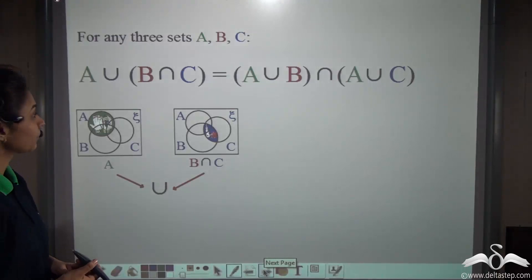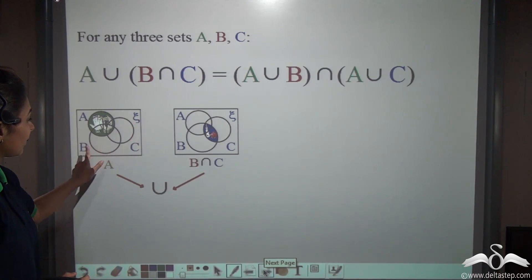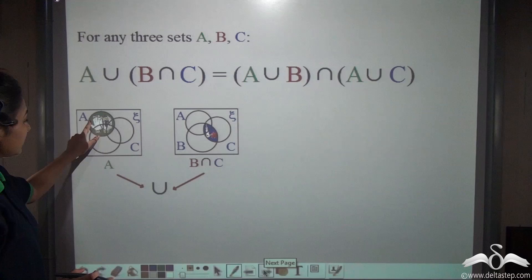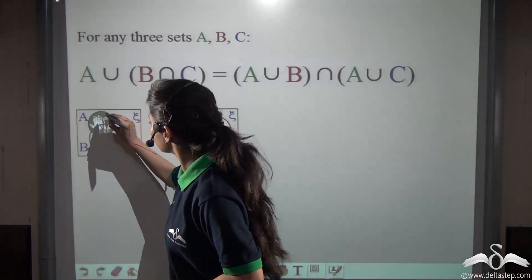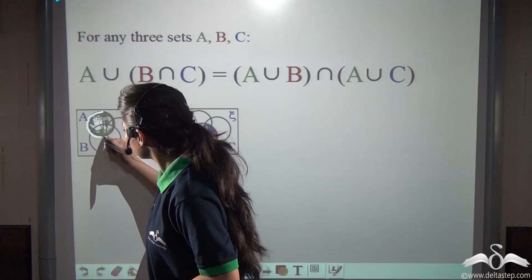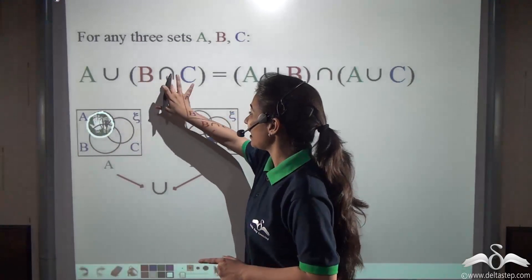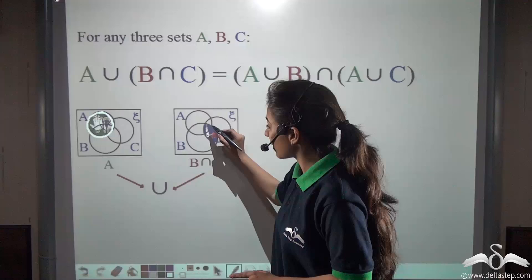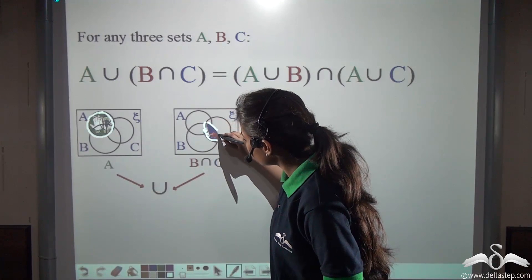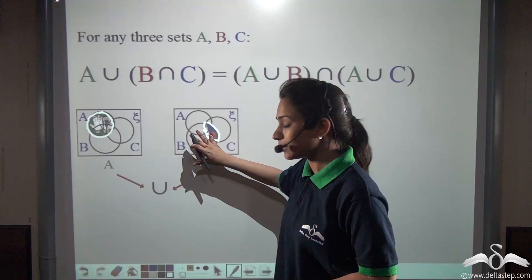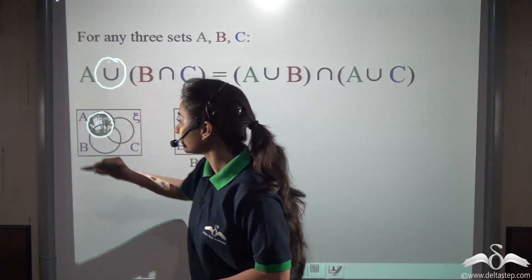Look at the Venn diagram. You know that set A in a Venn diagram can be represented by this circle — this is the set of wicket keepers. And B intersection C can be represented by the intersection part of B and C, that means players who are both batsmen and bowlers. Now what do we do? We unite them.